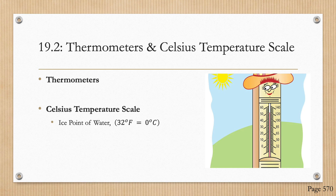The Celsius temperature scale is a measure of temperature where the ice point or freezing point of water is defined to have a temperature of 0 degrees Celsius.